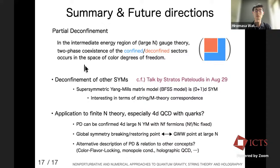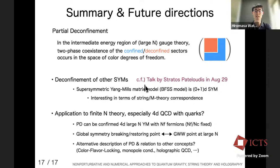In summary, two-phase coexistence of color degrees of freedom can occur in large-N gauge theory at finite temperature. This concept can be tested in the 0+1 dimensional supersymmetric Yang-Mills theory known as the BFSS or BMN matrix model in a numerical manner. Please check the talk by Stratos on Monday. Thank you very much.